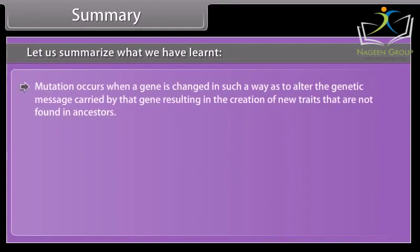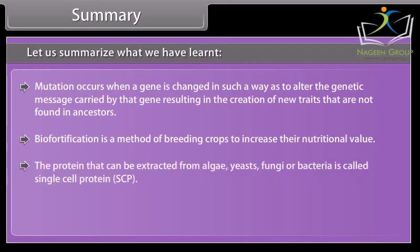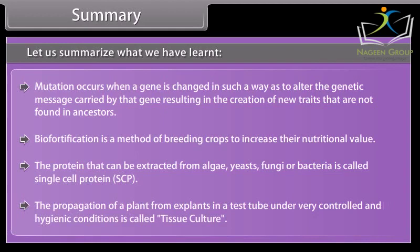Mutation occurs when a gene is changed in such a way as to alter the genetic message carried by that gene, resulting in the creation of traits not found in ancestors. Biofortification is a method of breeding crops to increase their nutritional value. The protein that can be extracted from algae, yeasts, fungi, or bacteria is called single cell protein (SCP). The propagation of a plant from explants in a test tube under very controlled and hygienic conditions is called tissue culture.